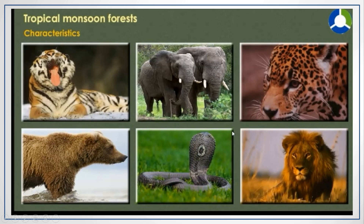Different types of animals dominate the forest wherever the forests are in plenty. The Indian Asiatic lion is the only species of lion found in India, in Gujarat. Tigers, bears, elephants, and several types of reptiles are very commonly found in the monsoon region.